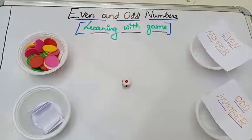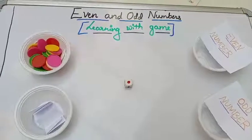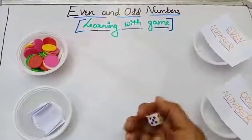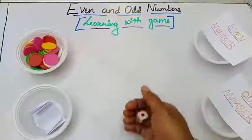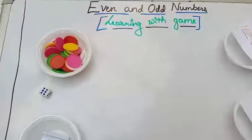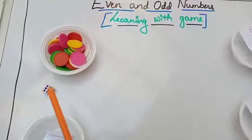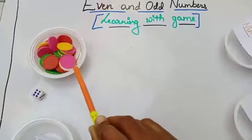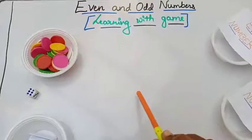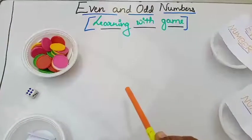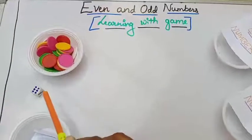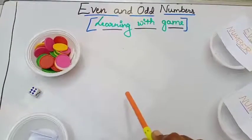I am going to show you the first trial — how to play the game. First you roll the dice. How much you got now? It is six, so you have to take six coins from this bowl and see if that number is even or odd. Tell me, children — is six an even or odd number?